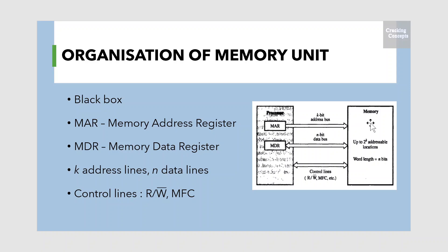If MAR is k bits long and MDR is n bits long, then the memory unit may contain up to 2^k addressable locations. During a memory cycle, n bits of data are transferred between the memory and the processor. This transfer takes place over the processor bus, which has k address lines and n data lines. The bus also includes control lines, i.e. R/W and MFC, i.e. memory function completed, for coordinating data transfers.